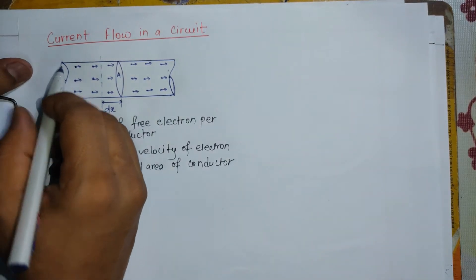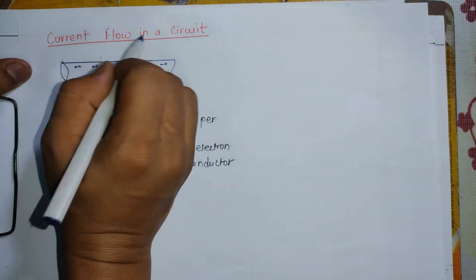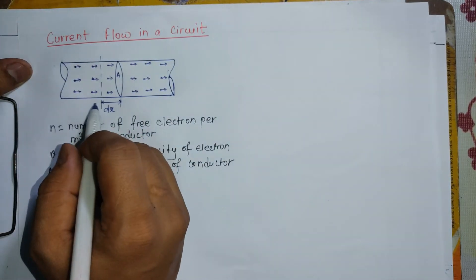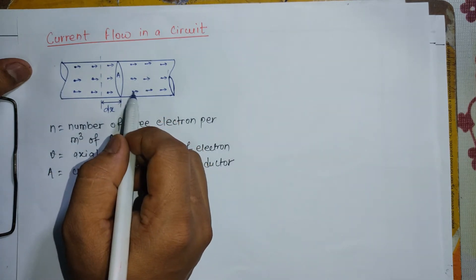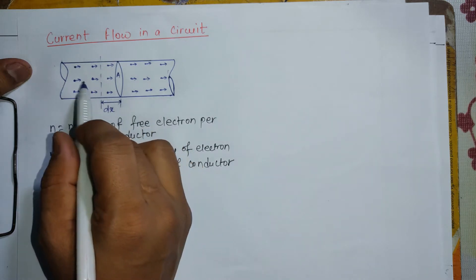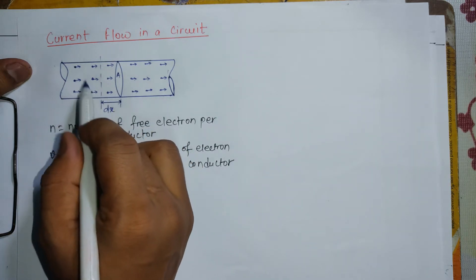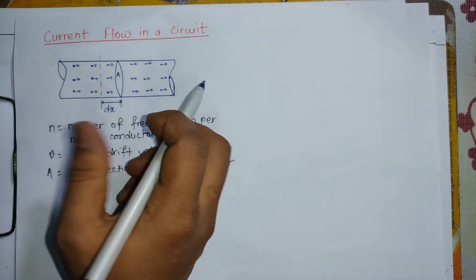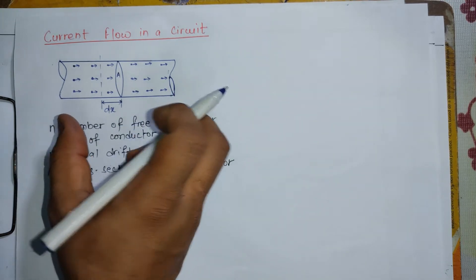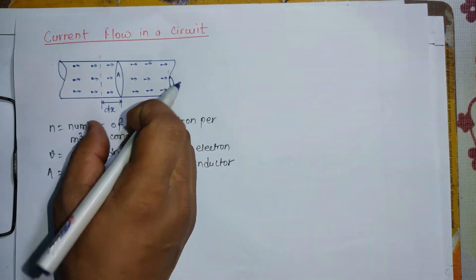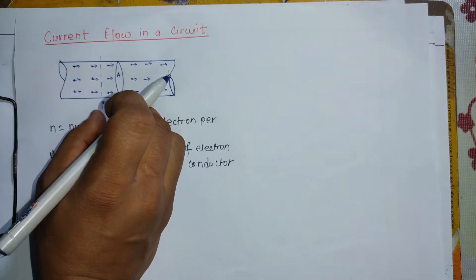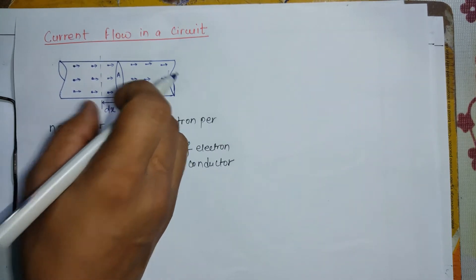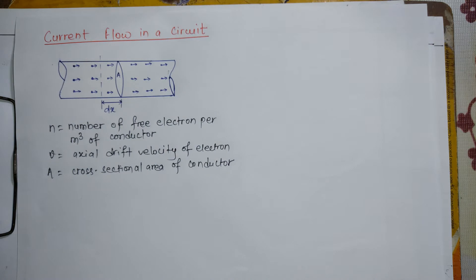This is the topic of current flow in a circuit. Let's consider this figure. This figure is a conductor — it's a wire, a circular wire. It's a section, and it has a small elementary length — a small part of the conductor.